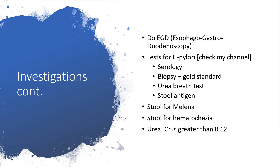Then you have to check stool for melena or hematochezia — that is frank blood in stool. Then you check your urea to creatinine ratio, which will be greater than 0.12.